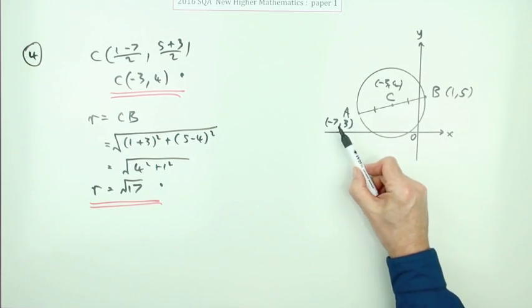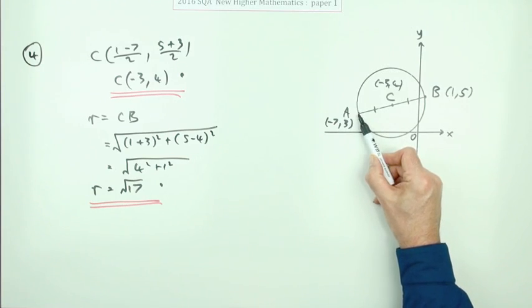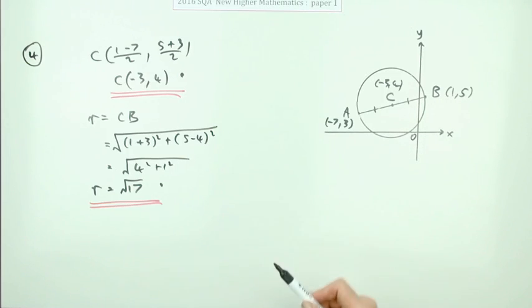Or you could have done the distance from A to C, which would have been exactly the same. Or you could have worked out the distance from A to B, but then you'd have had to half it afterwards.